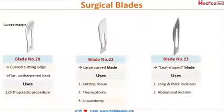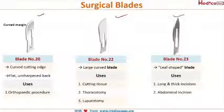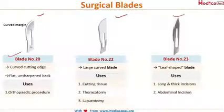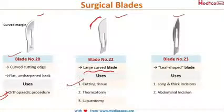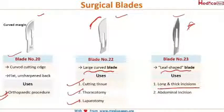Now let's discuss blade numbers 20, 22, and 23. All three have a belly and a curved edge. Blade number 20 is used in orthopedic procedures. Blade number 22 has a large curved blade and is mainly used for cutting tissues, thoracotomy, and laparotomy. Lastly, blade number 23 is a leaf-shaped blade used for making long and thick incisions and in abdominal incisions.